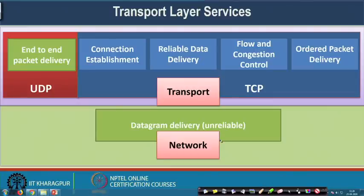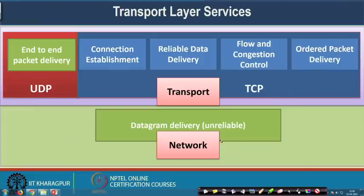When we say datagram delivery, it means the network layer — whenever it receives a packet (called a datagram at this layer) — looks at the source and destination address fields. The task of the network layer is to look at the destination address and forward the packet to the next hop. For example, if you want to transfer data from a machine at IIT Kharagpur to the Google server in the USA, the network layer handles routing that data hop by hop.